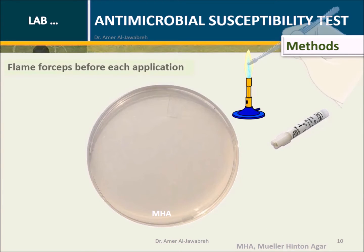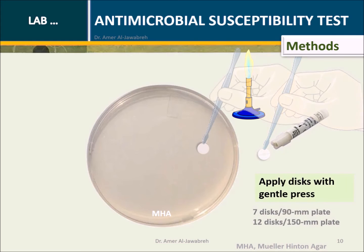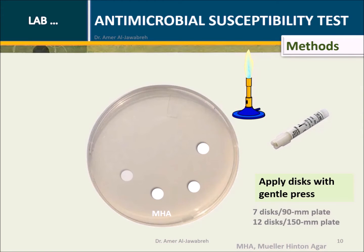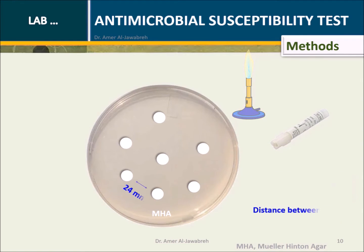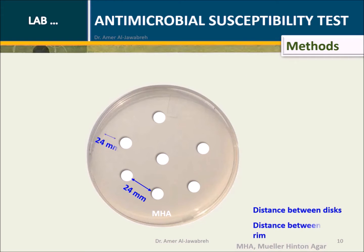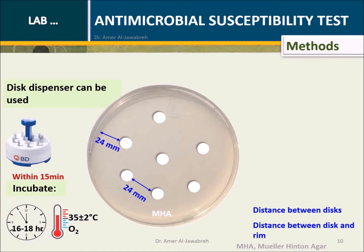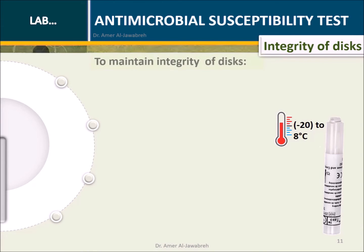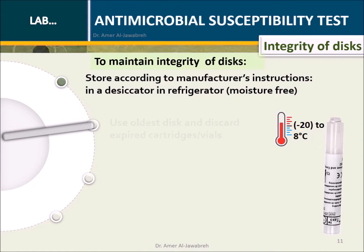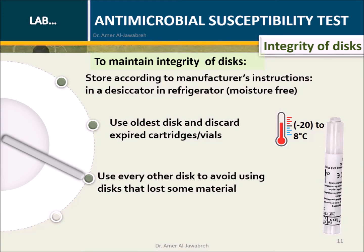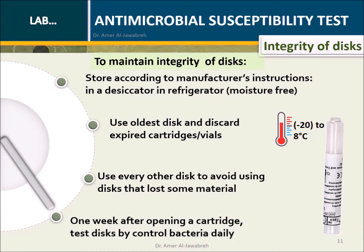Method: Flame forceps before each application. Apply each disk with gentle pressure — 7 disks per 90 mm plate, or 12 disks per 150 mm plate. Maintain proper distance between disks and between each disk and the rim. A disk dispenser can be used. Within 15 minutes, incubate aerobically at 35°C for 16 to 18 hours. Proper storage and management of antimicrobial disks must be maintained to ensure integrity.